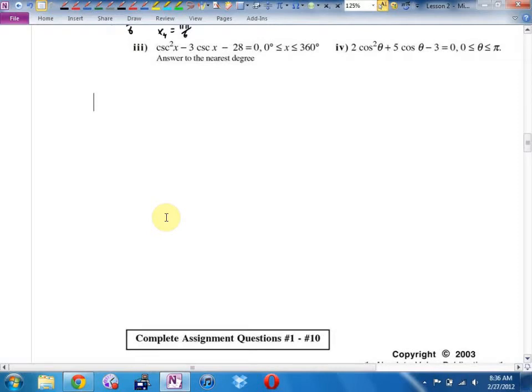So it says answer to the nearest degree. You know what? We're not going to do that. So we're going to cross out where it says answer to the nearest degree. And I'm going to scribble out the degrees, and instead of 360 degrees, I'm going to put here a 2π.